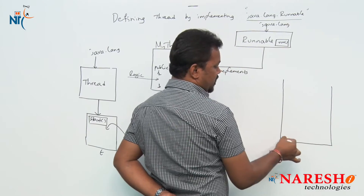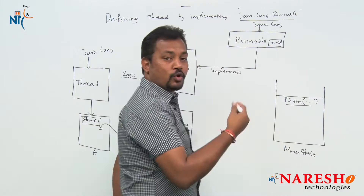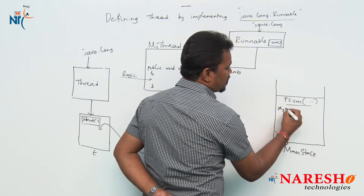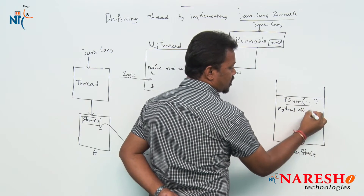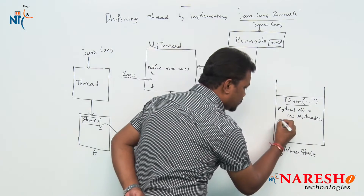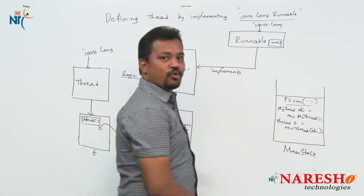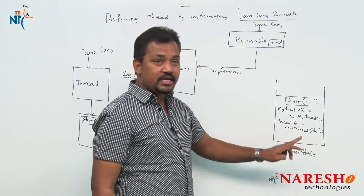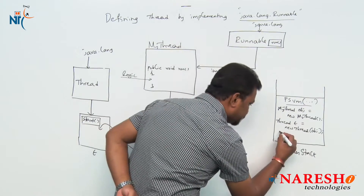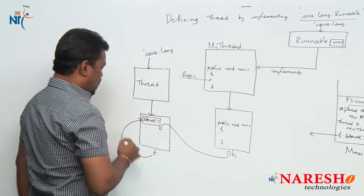In the main stack, public static void main starts execution. First I create the user-defined class object: MyThread obj = new MyThread(). Then I create an object for Thread class: Thread t = new Thread(obj), passing obj as parameter. Once I pass obj as parameter, the t object holds the reference of obj. Now using t, I can call t.start().